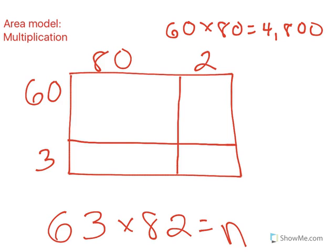Now I'm going to find the area of each piece of this rectangle. The first piece is this one right here. That one has a width of 60 and a length of 80. 60 times 80 is 4,800.